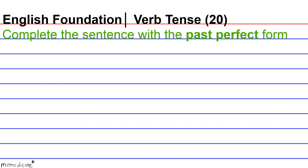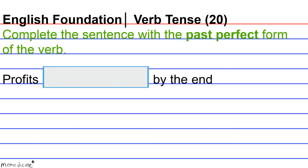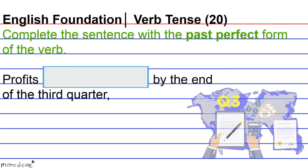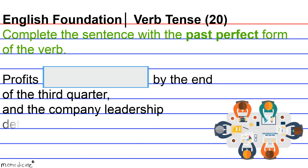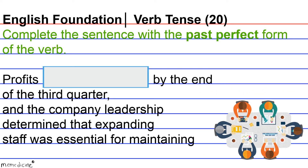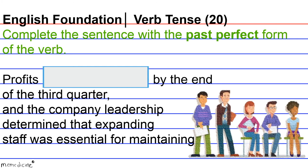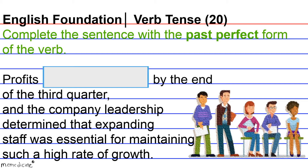perfect form of the verb. Profits blank by the end of the third quarter, and the company leadership determined that expanding staff was essential for maintaining such a high rate of growth. The task here is to shift the tense of 'double' to its past